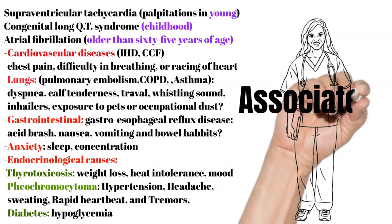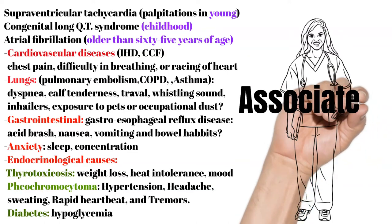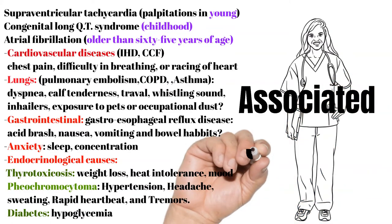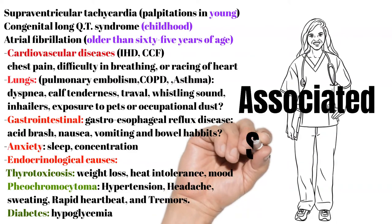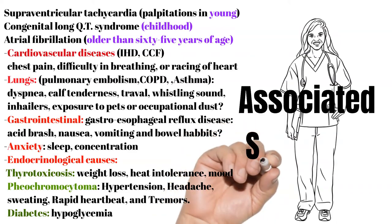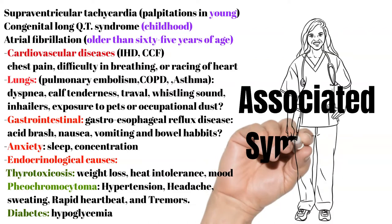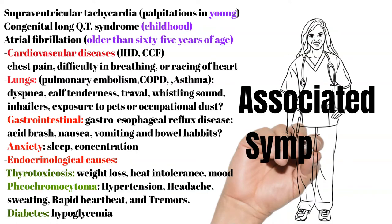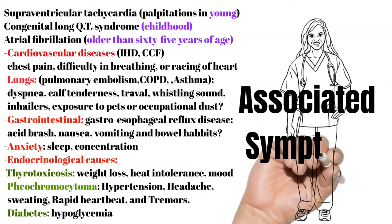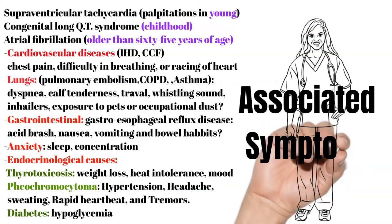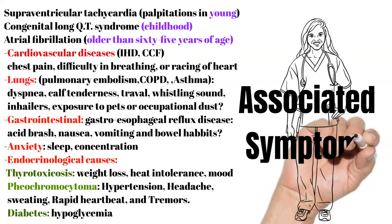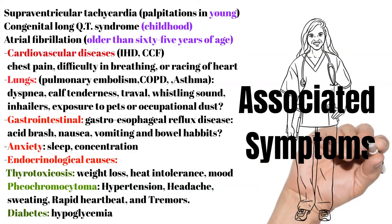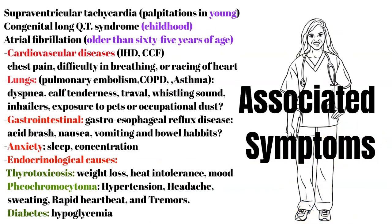Next, we discuss endocrinological causes that may cause palpitations. First, ask about the symptoms of thyrotoxicosis such as weight loss, heat intolerance, and mood changes. Next, ask about features of phaeochromocytoma like high blood pressure, headache, sweating, rapid heartbeat, and tremors. Furthermore, ask about any symptoms of diabetes, especially any evidence of hypoglycemia, compliance to medications, recent change in dose of insulin, or any skipped meals.